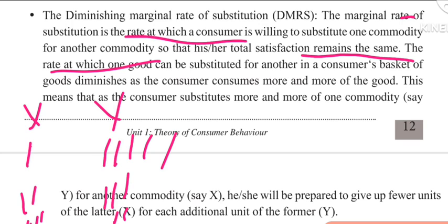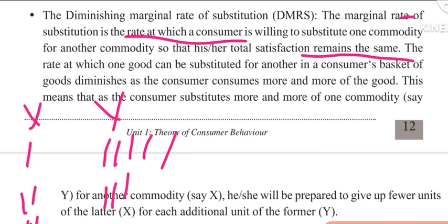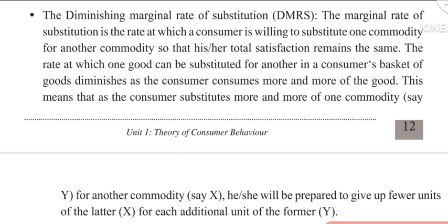The rate at which one good can be substituted for another in a consumer's basket of goods diminishes as the consumer consumes more and more of one commodity. This means that as the consumer substitutes more and more of one commodity, say Y, for another commodity X, he or she will be prepared to give up fewer units of X for each additional unit of Y.